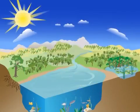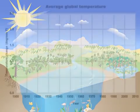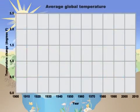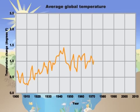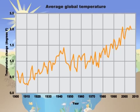Carbon dioxide is a greenhouse gas, which means it traps heat in the atmosphere and keeps the earth warm. So all this extra carbon dioxide is making the earth warmer and causing the climate to change.